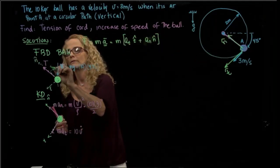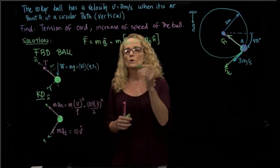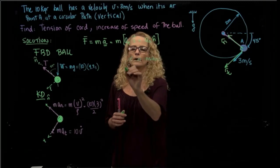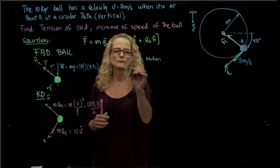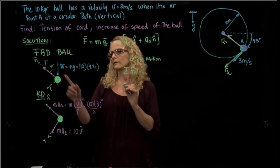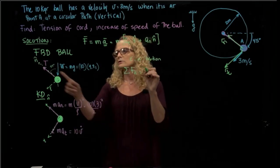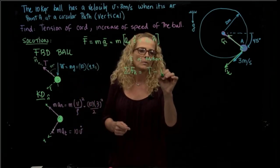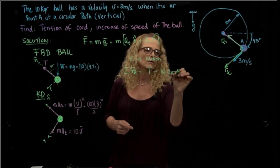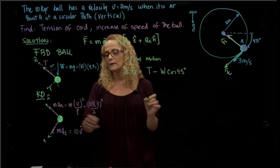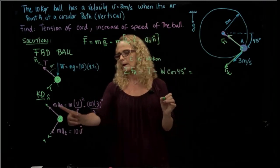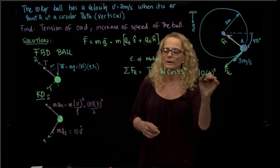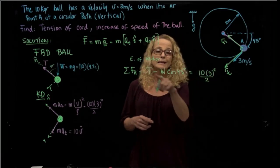So equations of motion adding forces in my normal. So this is tension minus weight cosine of 45 equals to my 10 times 3 squared over 2. In this equation, the only unknown that I have is the tension.